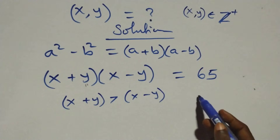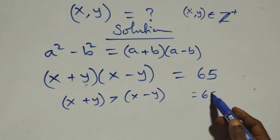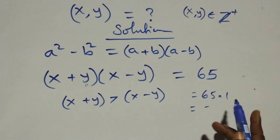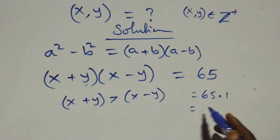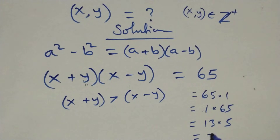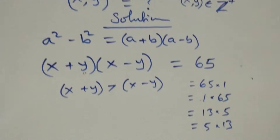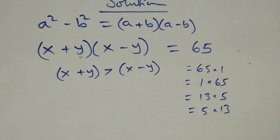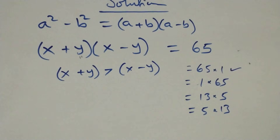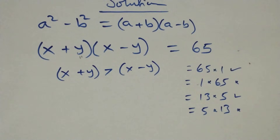For 65, the factor pairs we can have are: 65 times 1, or 13 times 5, or 5 times 13. Since the first number should be greater than the second, 65×1 and 13×5 satisfy this condition, while 1×65 and 5×13 do not. So we have two valid cases.